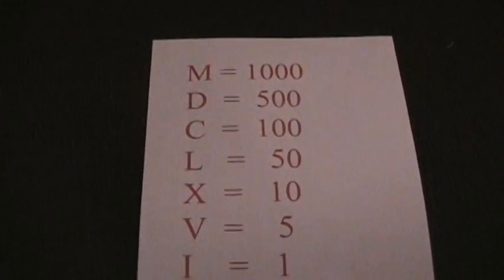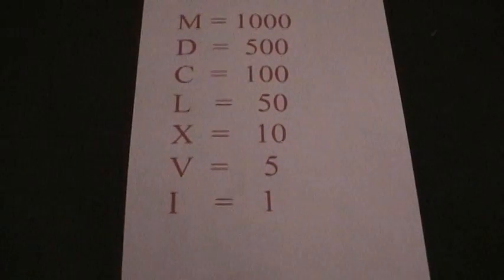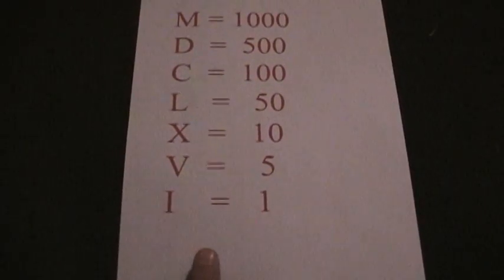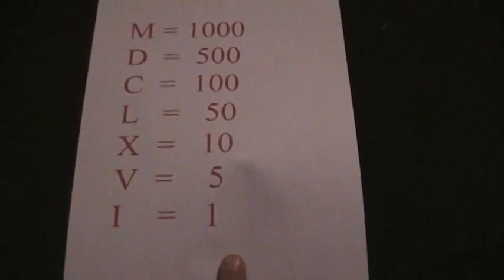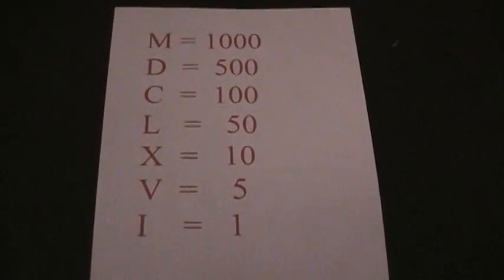And then, you know, seventy-four. It'll be LXX would be seventy, and IV would be four. So 1974 would be MCMLXXIV. I hope that isn't too confusing for you.